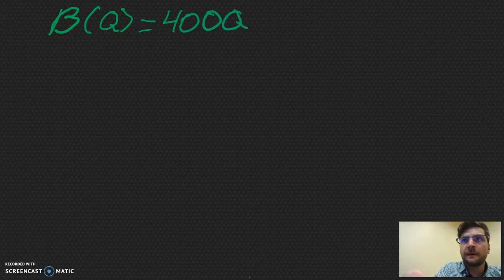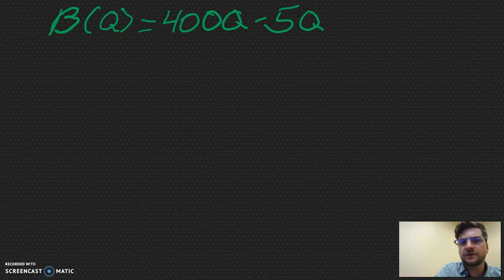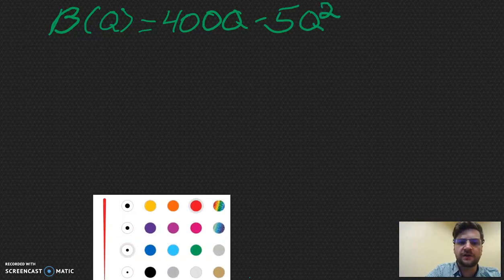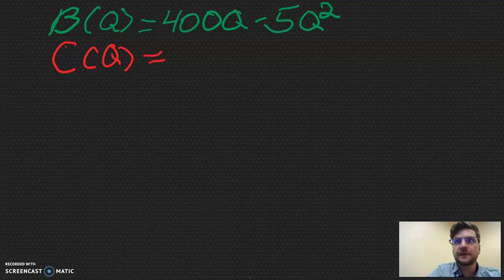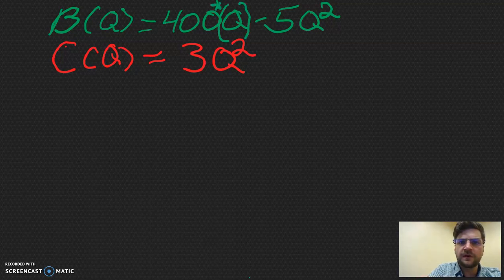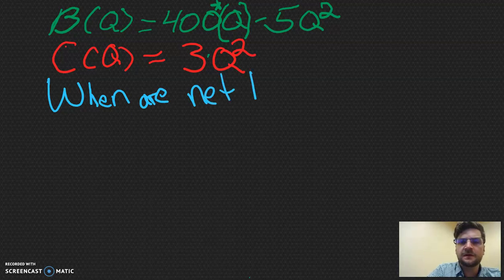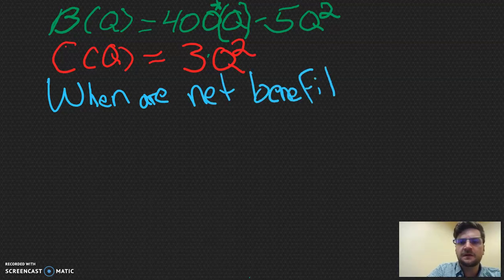So let's get right into it. The one that somebody emailed me about is regarding the firm's cost and benefit structure. We're told that the benefit, which is a function of Q, is equal to 400Q minus 5Q squared. That's our benefit function. What about our cost function? Our cost function is also a function of Q, and that's equal to 3Q squared. We're asked, when are the net benefits maximized?